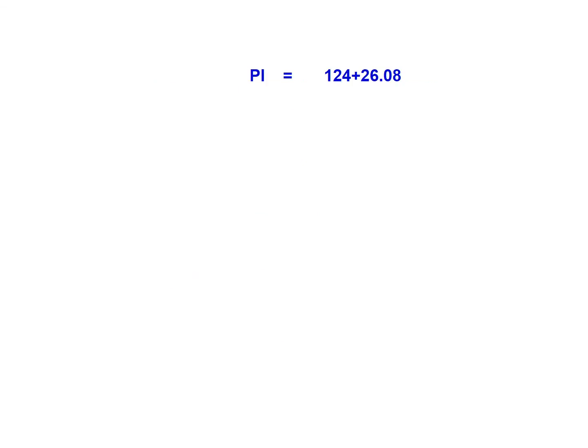Now we can solve for the points of interest. We're going to start with the PI with the station of 124 plus 26.08. We're going to subtract off the tangent length—it's going to take us back to the PC. Subtract the tangent length of 3 plus 99.03, this will give us a PC station of 120 plus 27.05.